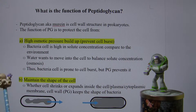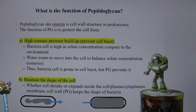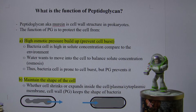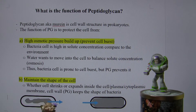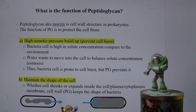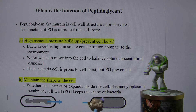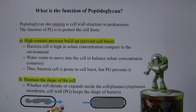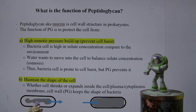Peptidoglycan also maintains the shape of the cell. The cell can shrink or expand inside because the plasma membrane — also called cell membrane or cytoplasmic membrane — is not rigid like peptidoglycan. Osmosis can occur and water can move from the cell to outside if there's a lot of solute outside, like in the Dead Sea. But if concentration is much higher inside the cell, then water moves in. Despite this shrinking and expanding, the cell is able to maintain its shape through peptidoglycan, which does not shrink or expand as water moves in and out.